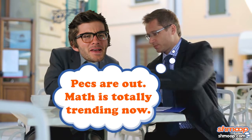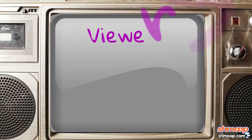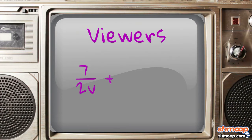Brian is trying to figure out how many viewers he can expect for his show. The network execs have given him a formula to figure out how many viewers Brian can expect: 7 over 2V plus 1 over 4 equals 11 over 4V.